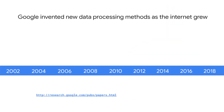One of the interesting things about Google is that historically, we have faced issues related to large data sets, fast-changing data, and varied data — what is commonly called big data — earlier than the rest of the industry. Having to index the World Wide Web will do that.